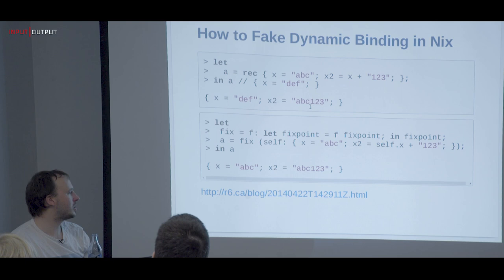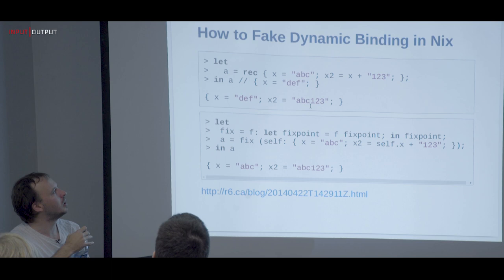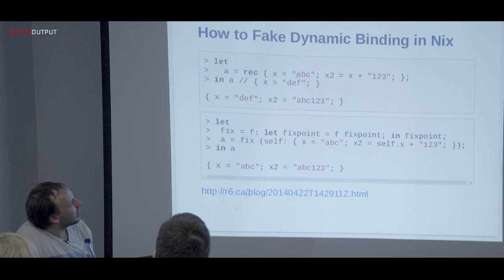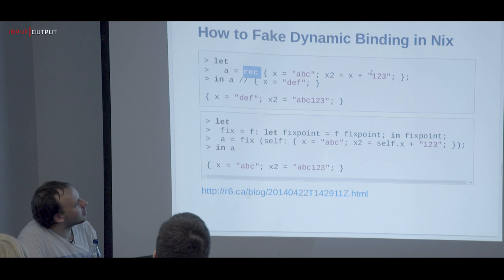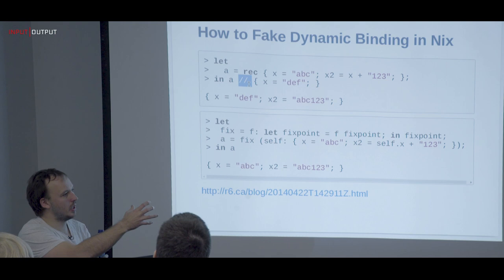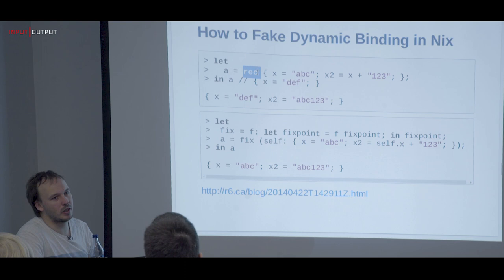There is a blog post by Russell O'Connor from 2014 exploring how to do dynamic binding in Nix. The problem is: if you have an attribute set using `rec` and then merge that attribute set with another one, the `rec` function won't have an effect anymore — it's only local to the original attribute set. So the merged version sees the overwritten form but the `rec` references the original values.